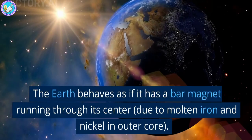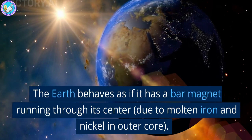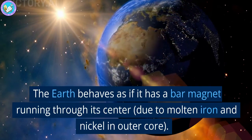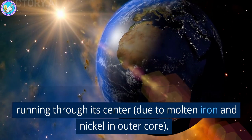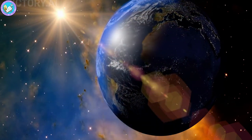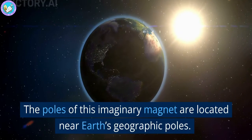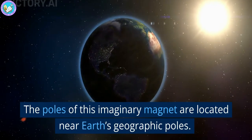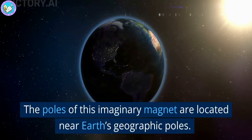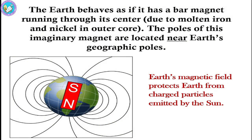If you consider the Earth, it behaves like a bar magnet running through its center, because it has molten iron and nickel in the outer core. I have given you the diagram showing the molten iron and nickel in the outer core, where the poles of this imaginary magnet are located near Earth's geographic poles. This can be considered as the Earth's magnetic field, which protects the Earth from charged particles emitted by the Sun.